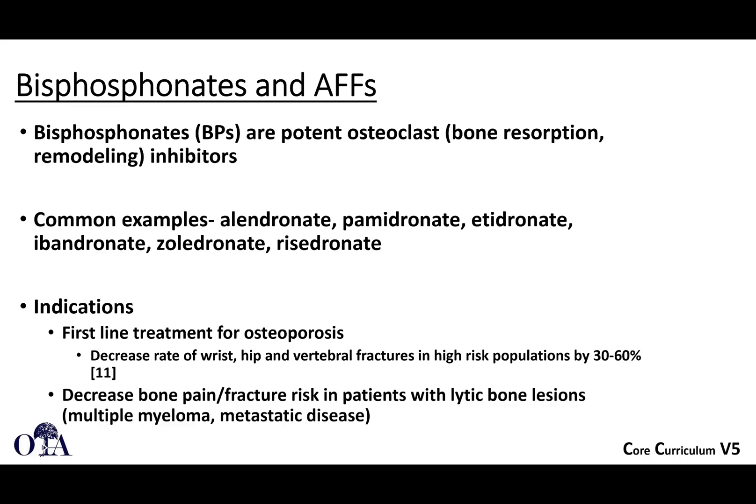Bisphosphonates are commonly used drugs to prevent fractures. They are potent osteoclast inhibitors — osteoclasts resorb bone — so they help prevent fractures by blocking osteoclasts. Drugs like alendronate, pamidronate, and etidronate are commonly used. They are a first-line treatment for osteoporosis and have clearly demonstrated decreased rates of wrist, hip, and vertebral fractures in high-risk populations. They are also used for bone pain in patients with lytic bone lesions, such as metastatic disease or multiple myeloma.